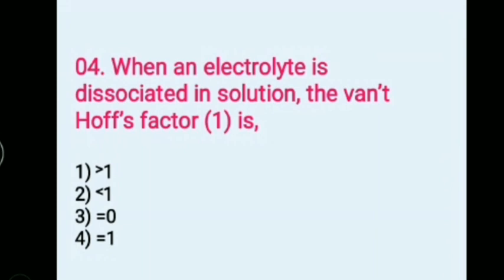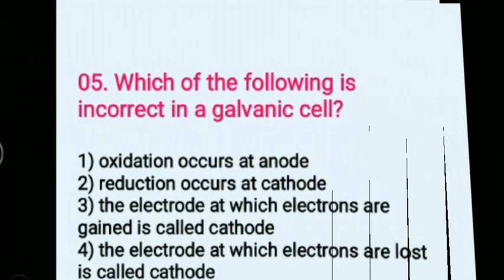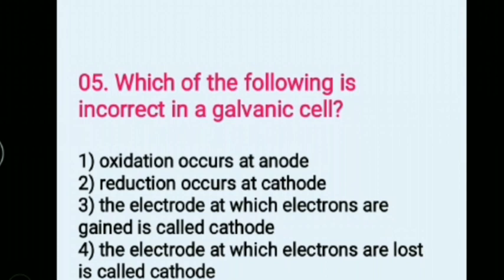When an electrolyte is dissociated in solution, the Van't Hoff factor is: Options: 1) Greater than 1, 2) Less than 1, 3) Equal to 0, 4) Equal to 1. Answer: 1) Greater than 1.